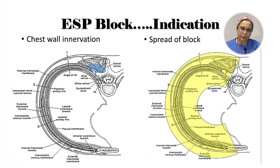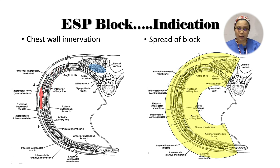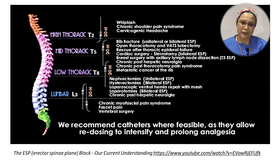Another theory is that the dorsal rami are blocked as they ascend through the lake of LA deposited at the ESP. There is also a theory that the ESP is connected laterally with the plane deep to the serratus anterior muscle, and LA travelling laterally within this plane can reach and anaesthetize the lateral cutaneous nerve branch. So theoretically, we can perform ESP block from the cervical to lumbar region, covering practically the whole trunk.